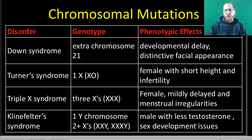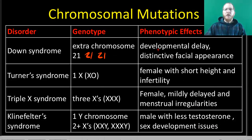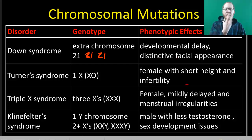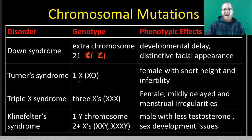For chromosomal mutations: if you have three copies of chromosome 21, you have Down syndrome, which leads to slower mental abilities and certain characteristic appearances, especially in the face — you can often identify a person with Down syndrome just by looking at their facial structure.